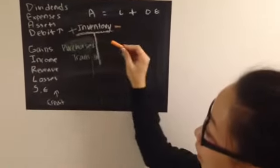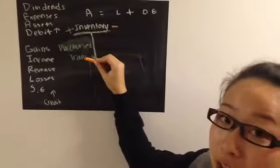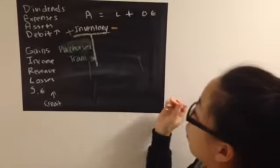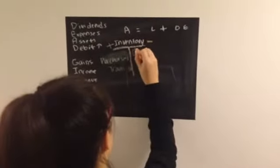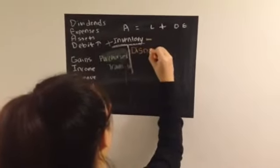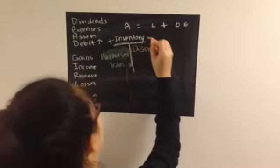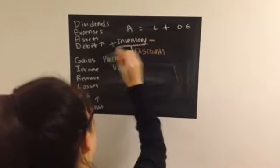We know that on the debit side, purchases and transportation in goes in there. But for the credit side, we know that you have discounts. I'm using orange for credit and green for debit.